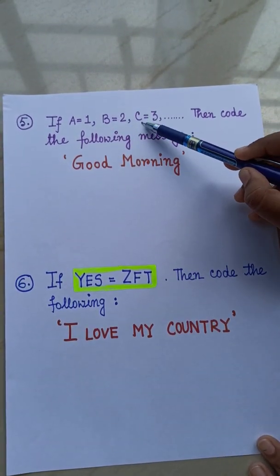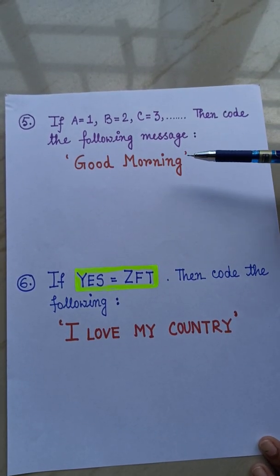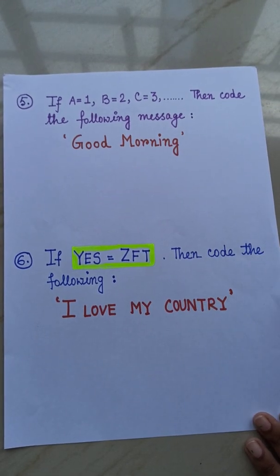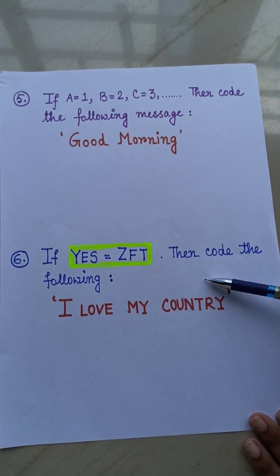You have to code the message using numbers. If A equals to 1, B equals to 2, C equals to 3. Then using this numbers, you have to code the message, good morning.